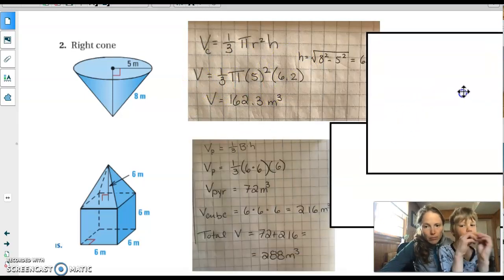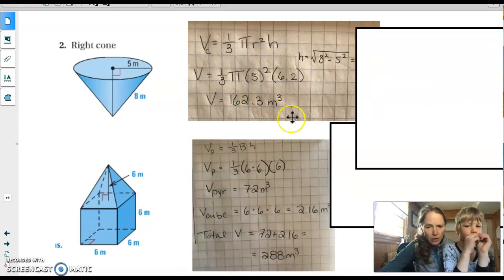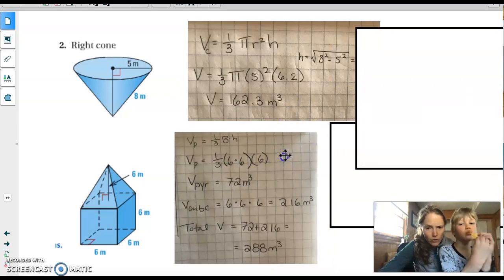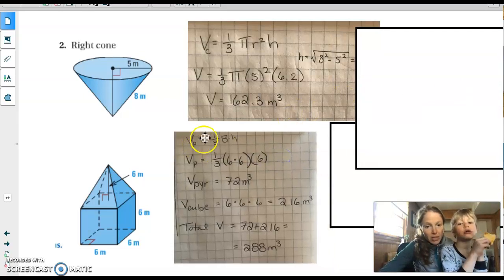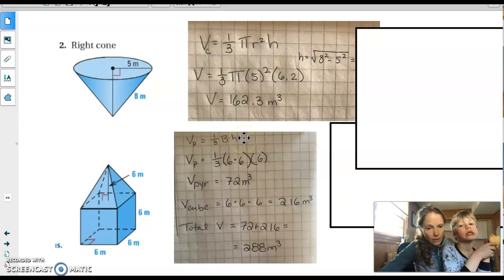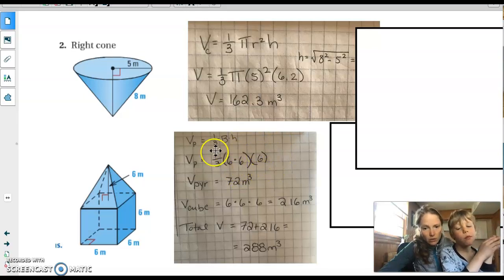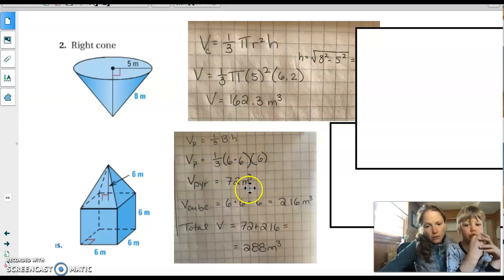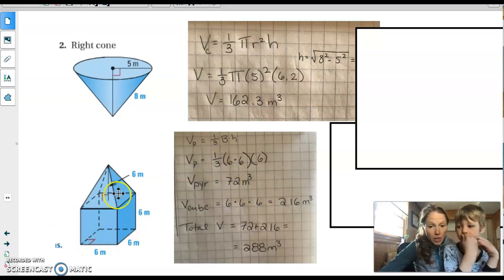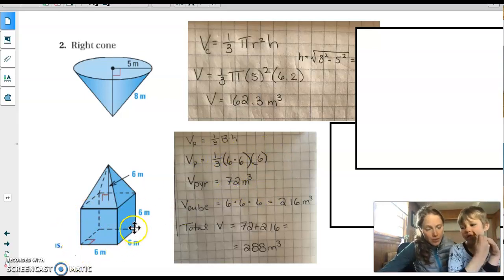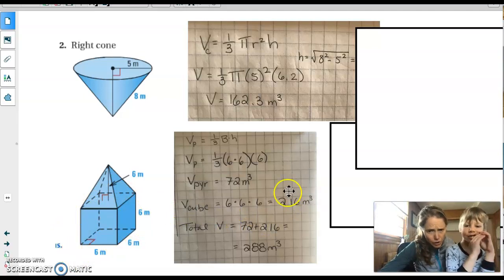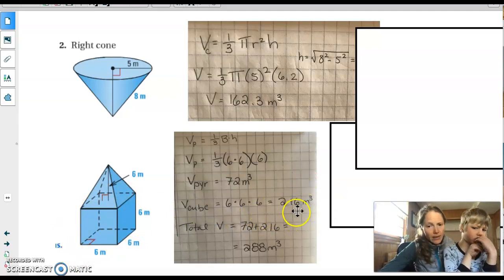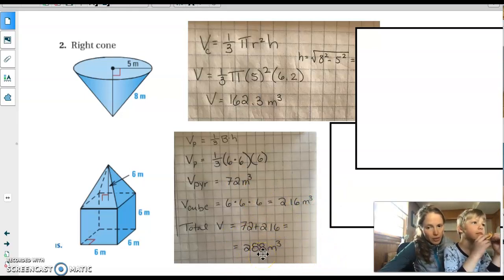For this one at the bottom, we're doing two separate calculations, and then we're adding them together. So first, we're going to find the volume of the pyramid, which is 1 third base times height again. The base is just a square, a 6 by 6 square. The height is also 6. So this is just 1 third 6 cubed, which is 72. The volume of the cube is just 6 times 6 times 6, which is 216. And then when we add them together, we get the total volume of the whole shape, 288 cubic meters.